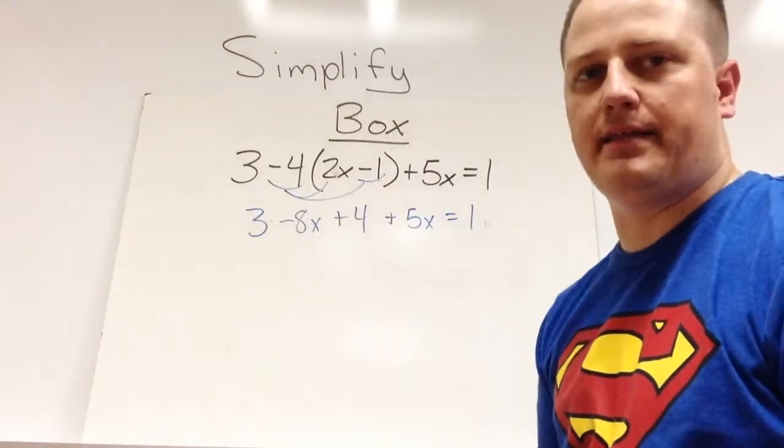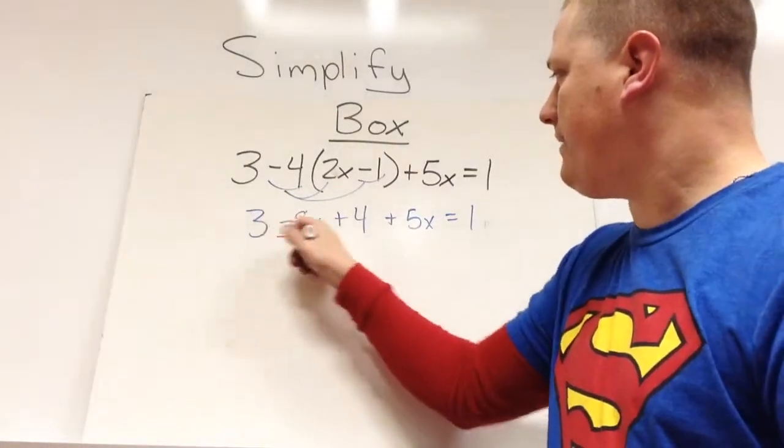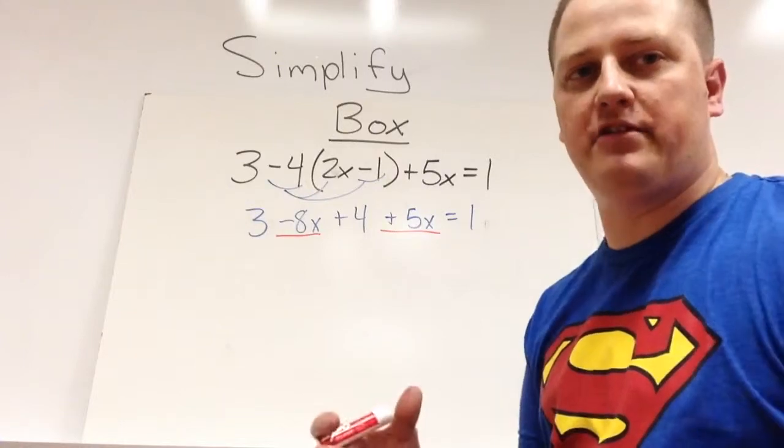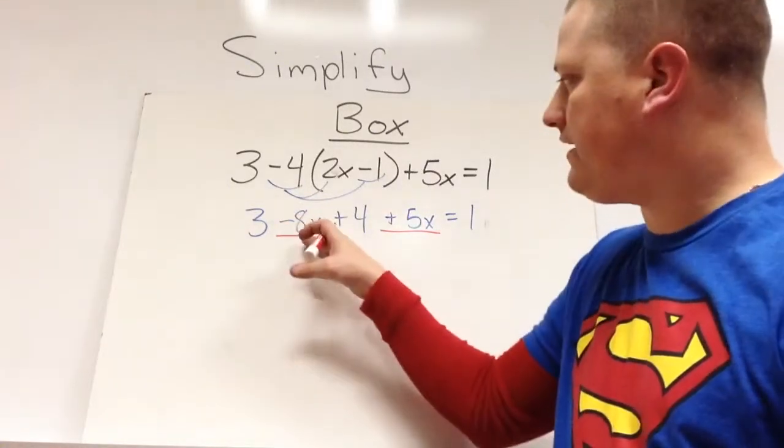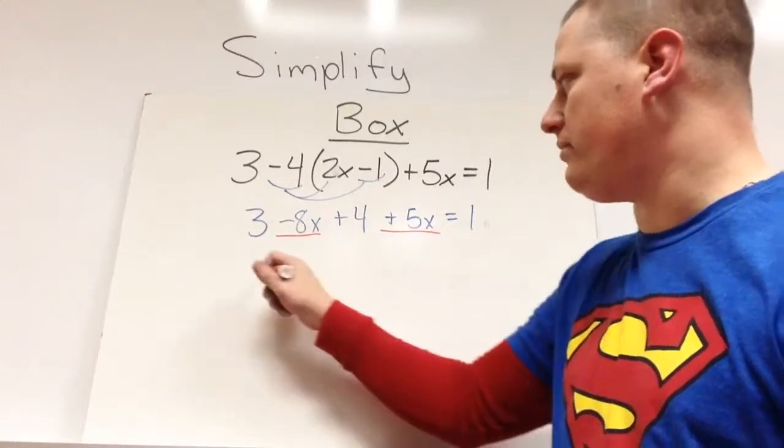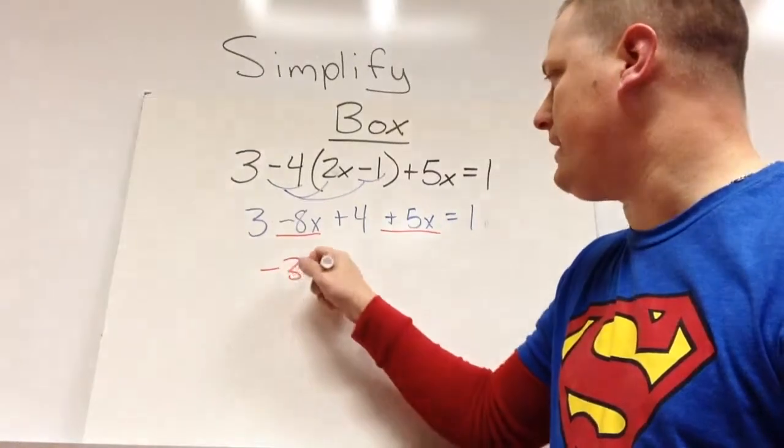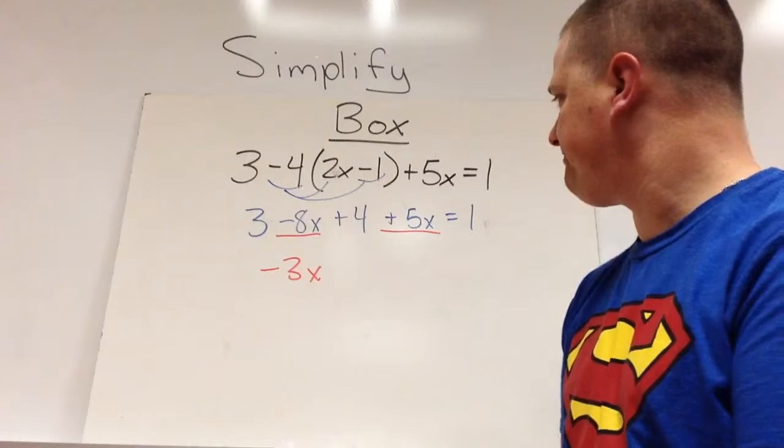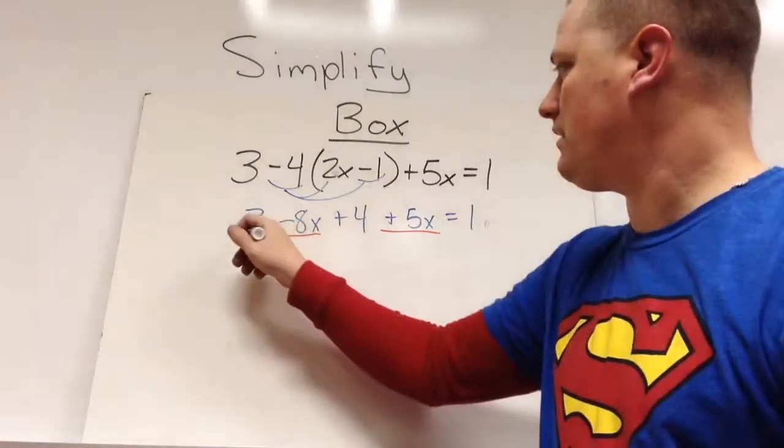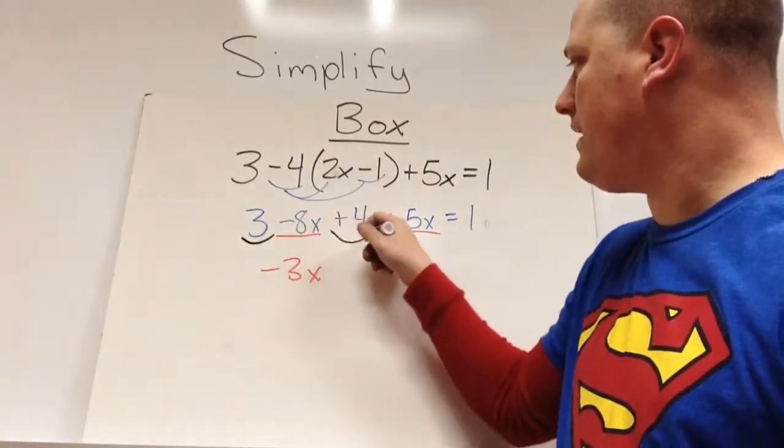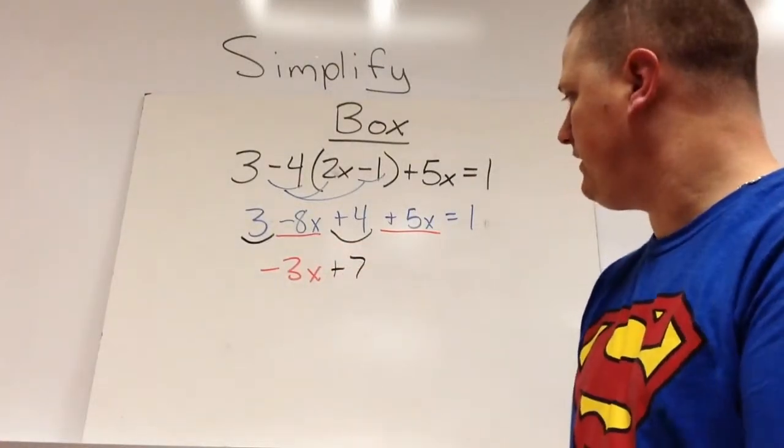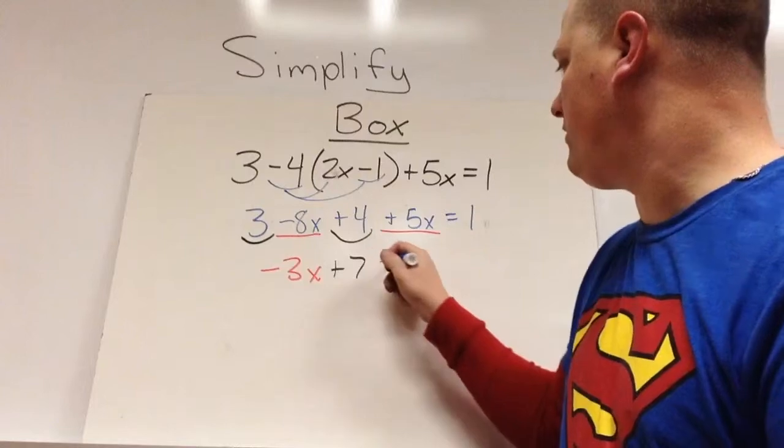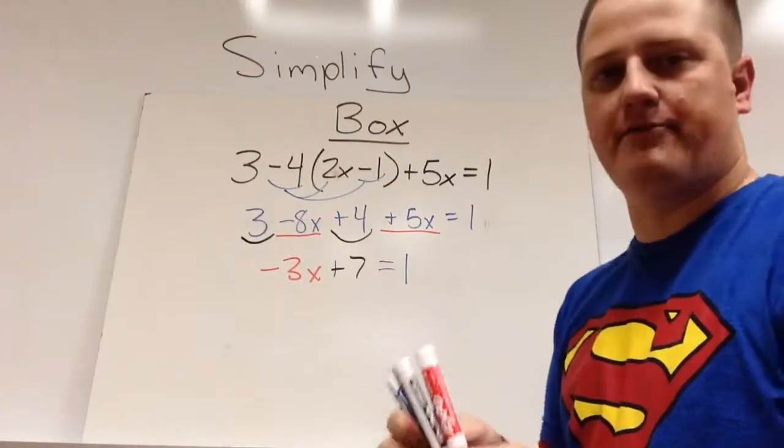From here, combine any like terms. I always like to combine my x's first, it typically helps me later on. So negative 8x, positive 5x would be negative 3x. 3 and positive 4 would make positive 7. And this equals 1.